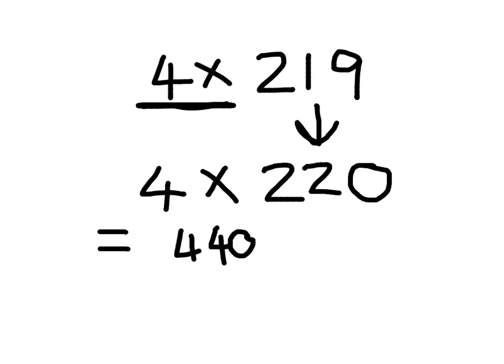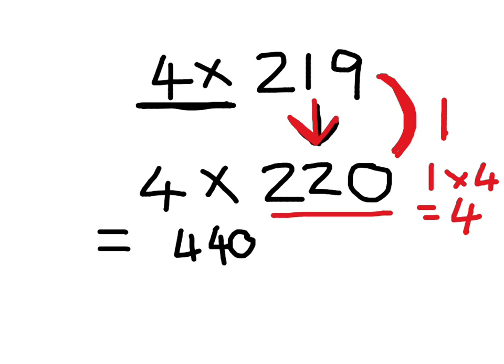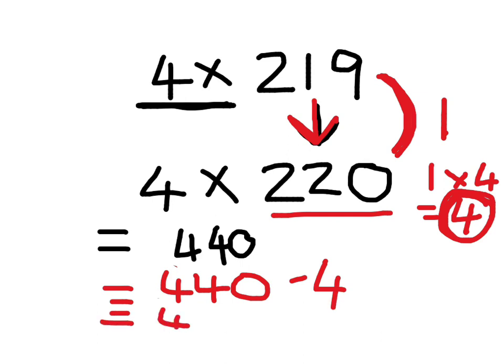But if we go back now and think about, well, what's the difference between our 219 and our 220? Put a little line here and write down what the difference is. That's correct. The difference is 1. So now we have to do 1 multiplied by 4. Really easily, the answer is 4. What we have to do now, because we've given 219, 1 to make 220, we now have to take that away. We have to take 4 of them away, because we've multiplied by 4. So let's write 440, take away 4. You can solve that and show me. That's right, it's 436.